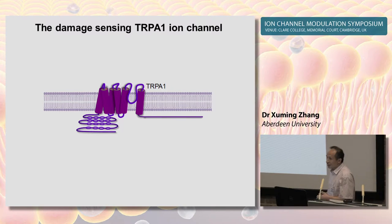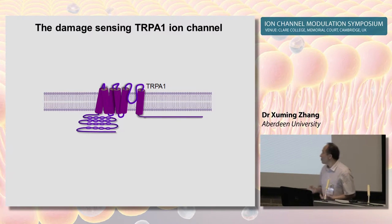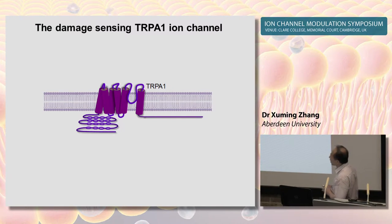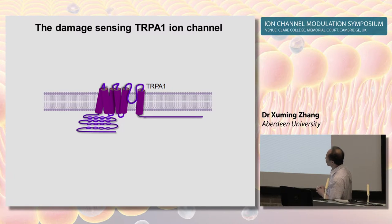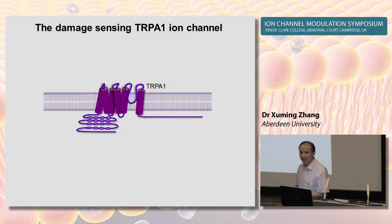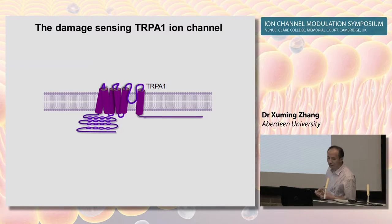TRPA1 is a member of the TRP channel superfamily with a typical architecture of seven transmembrane domains and a pore domain formed between the fifth and sixth transmembrane domains. It is a key damage-sensing ion channel responsible for detecting a variety of harmful signals from the environment and internal body.